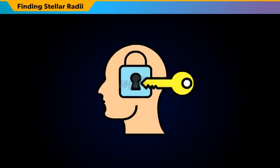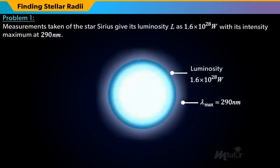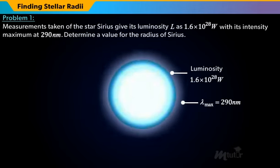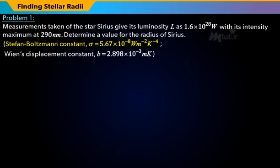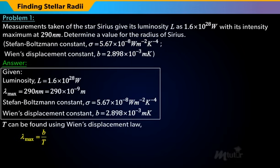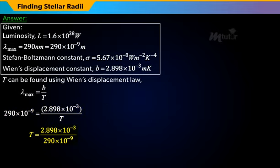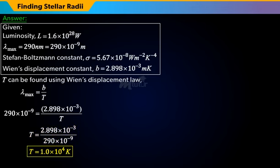Measurements taken of the star Sirius give its luminosity L as 1.6 × 10²⁸ watts with its intensity maximum at 290 nanometers. Determine a value for the radius of Sirius. The Stefan-Boltzmann constant sigma equals 5.67 × 10⁻⁸ W·m⁻²·K⁻⁴, and Wien's Displacement Constant B equals 2.898 × 10⁻³ meters Kelvin. Substituting into Wien's Displacement Law: 290 × 10⁻⁹ = 2.898 × 10⁻³ / T, giving T = 2.898 × 10⁻³ / (290 × 10⁻⁹). Solving, we get the value of T as 1.0 × 10⁴ Kelvin.